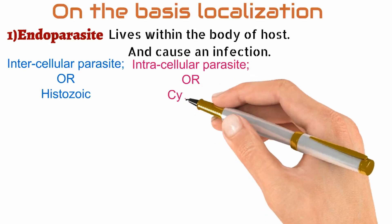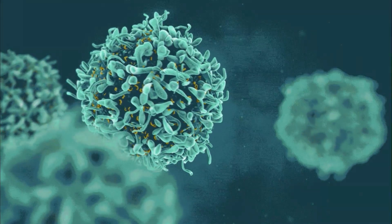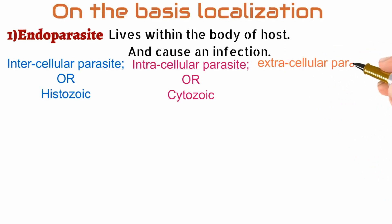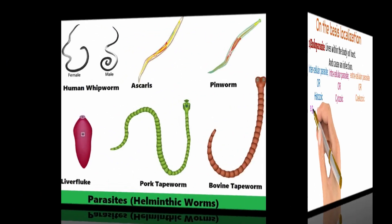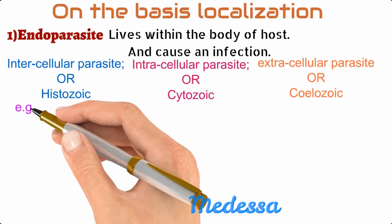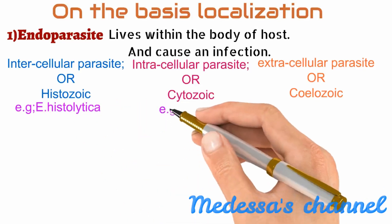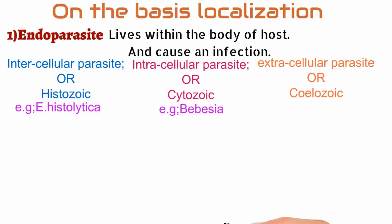Intracellular parasites are micro-parasites that are capable of growing and reproducing inside the cell, for example Babesia and Plasmodium. These are also called cytozoic parasites. On the other hand, extracellular parasites live outside the host cell with free movement, for example Trypanosoma. These are also called cerozoic parasites.